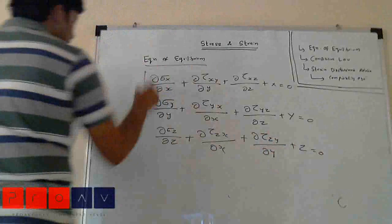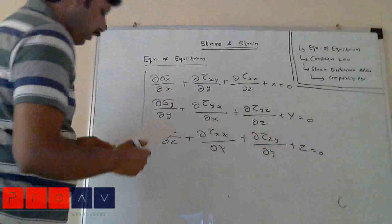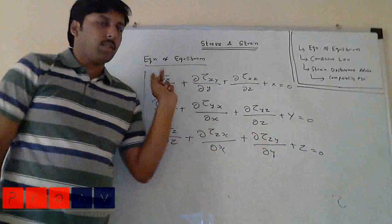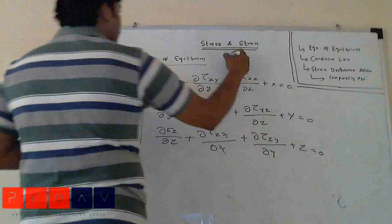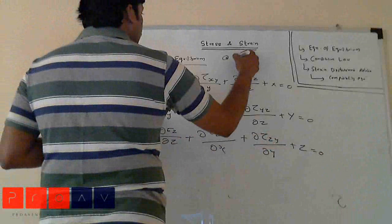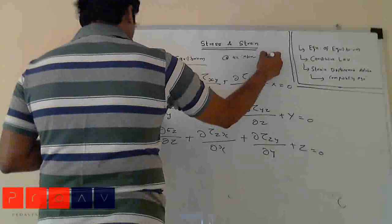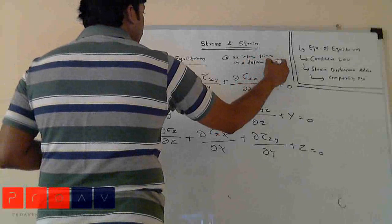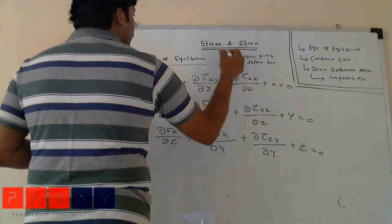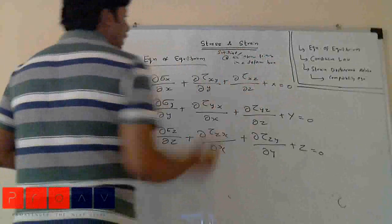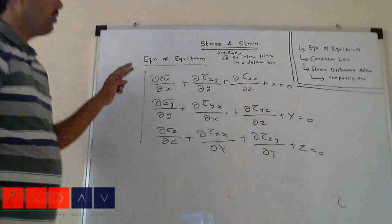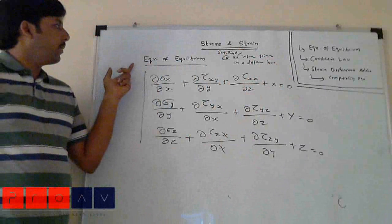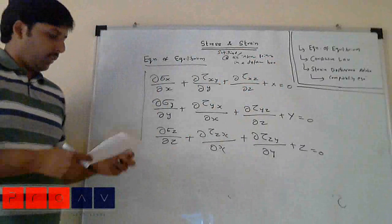So these are the three equations of equilibrium. These three equations have to be satisfied at all internal points in a deformable body. This is in three dimensions. So these are the three equations of equilibrium.